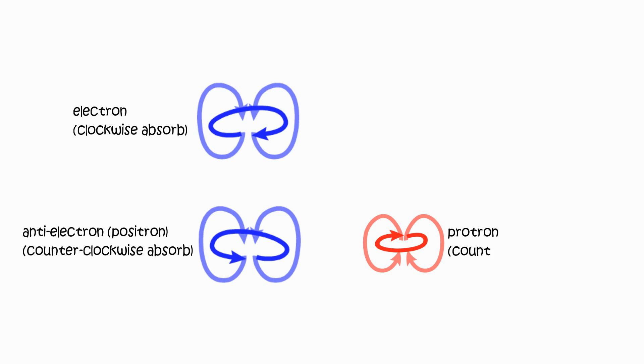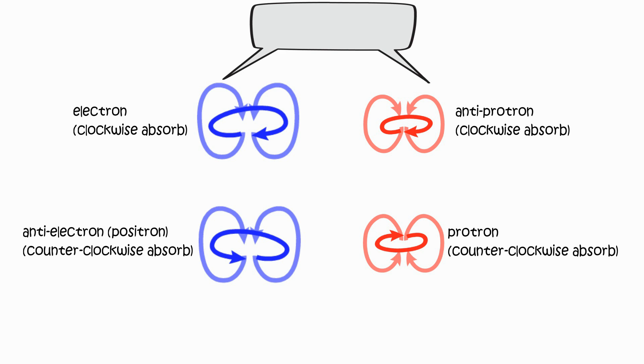This is the configuration of antimatter. Electron and antiproton's absorbing side is clockwise. Proton and positron's absorbing side is counterclockwise.